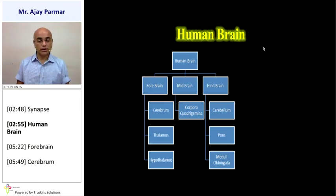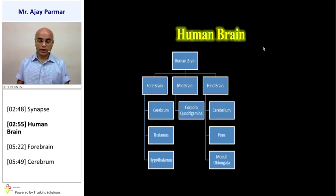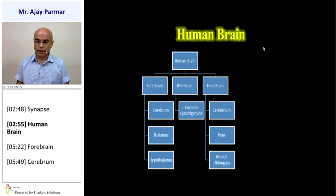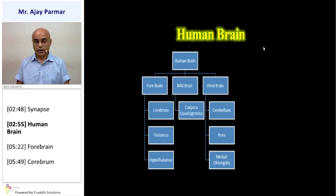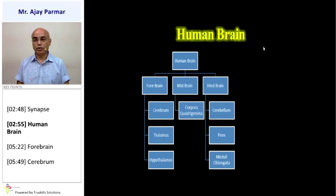The forebrain is further classified into the cerebrum, thalamus, and hypothalamus. The midbrain consists of the corpora quadrigemina. The hindbrain consists of the cerebellum, pons, and medulla oblongata.